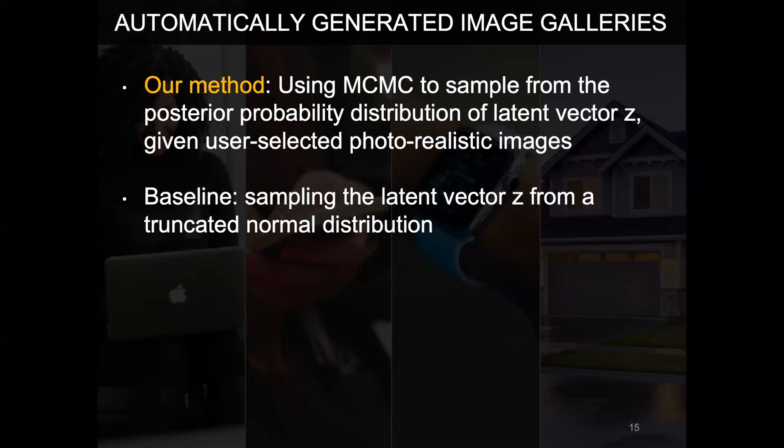Instead of crowd-sourcing photorealistic images from a GAN, we used a Markov Chain Monte Carlo method to sample and generate 25,000 images from the posterior probability distribution of latent vector Z given photorealistic images participants selected in study 1. We then compared our method with the baseline sampling methods that BigGAN authors used to evaluate their model, where they sampled a latent vector Z from a truncated normal distribution with 4 arbitrarily selected thresholds.